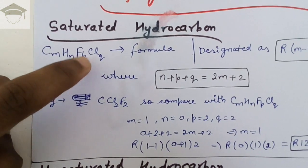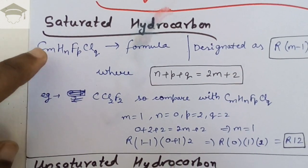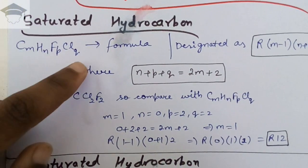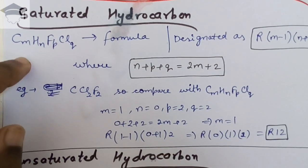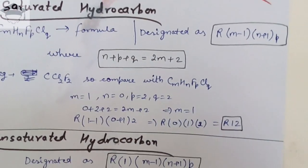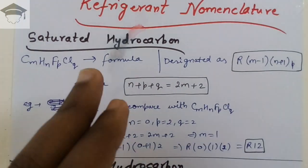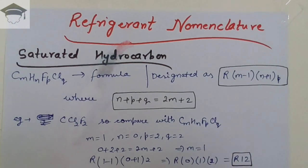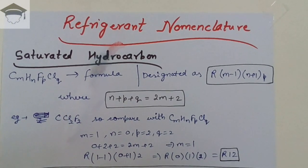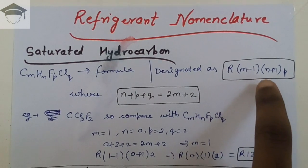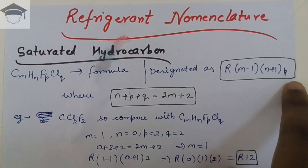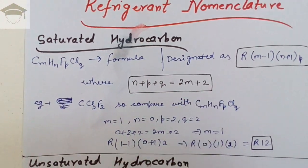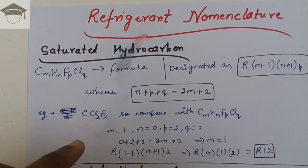The common formula for any refrigerant is denoted by CmHnFpClq, where C is carbon, H is hydrogen, F is fluorine, Cl is chlorine, and m, n, p, q denote the number of atoms in the formula. If the hydrocarbon is saturated, then we can designate the refrigerant as R(m−1)(n+1)(p), where n + p + q = 2m + 2.